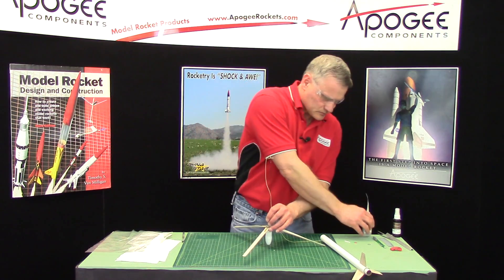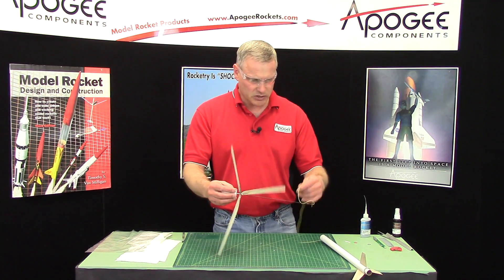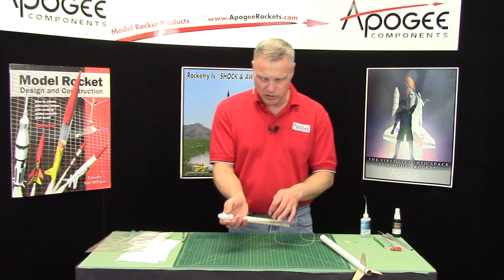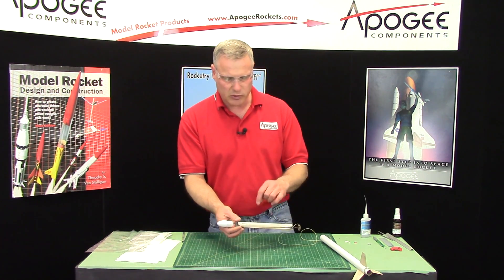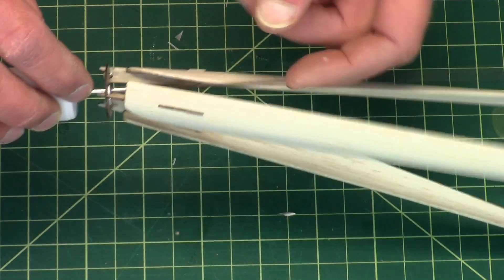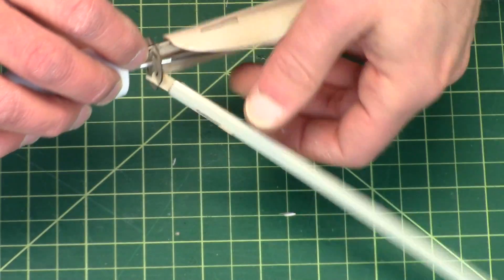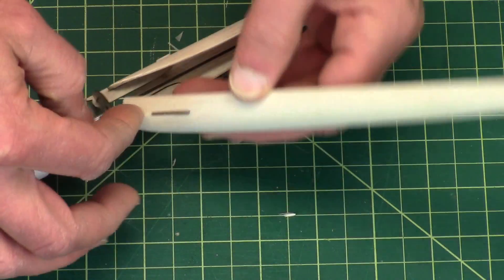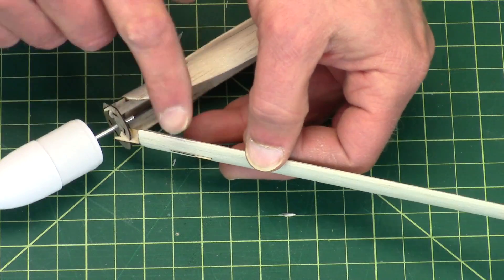All right, now my blades are permanently attached. If you ever break a blade or if it breaks in half and you have to replace it, balsa is pretty easy to replace. You just take a knife, cut away all the balsa wood, sand down the pylon, and then you can reattach a new balsa wood blade to it.